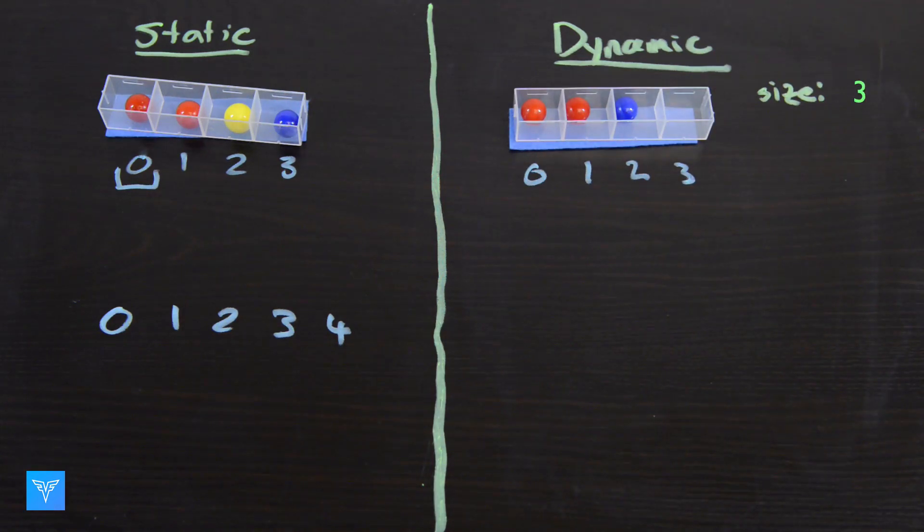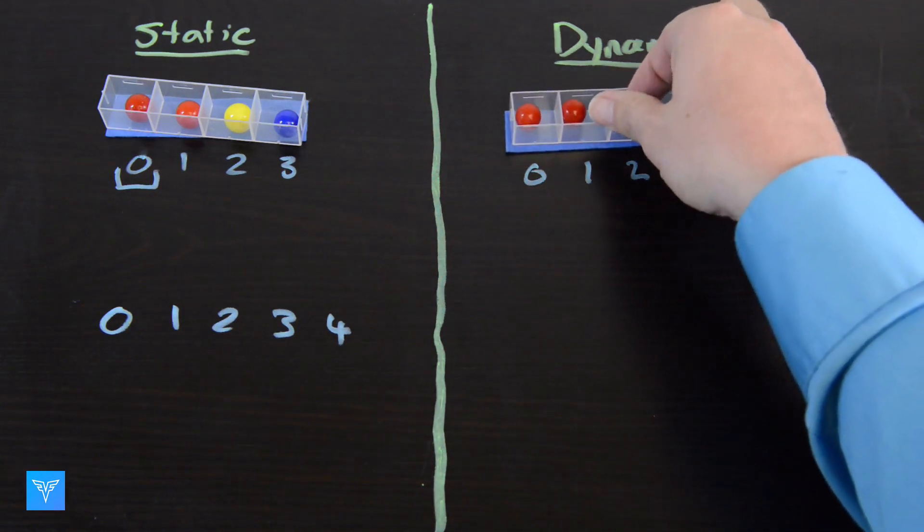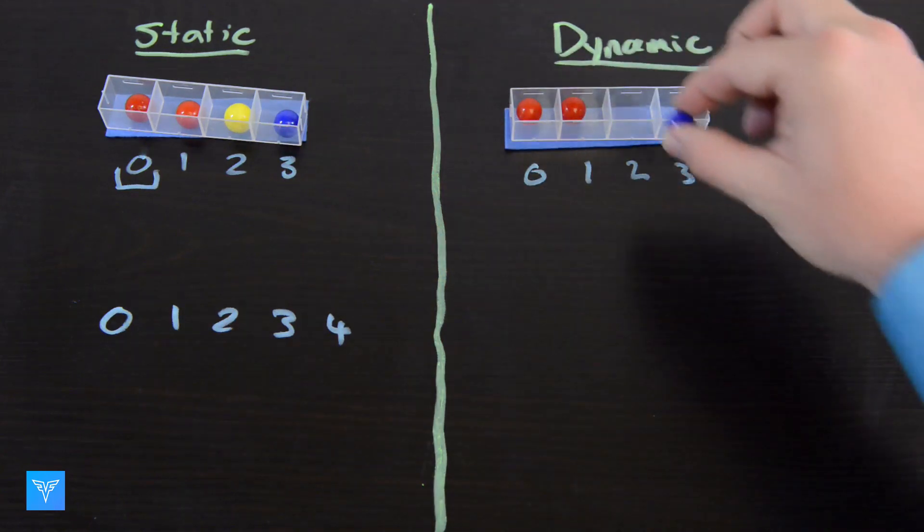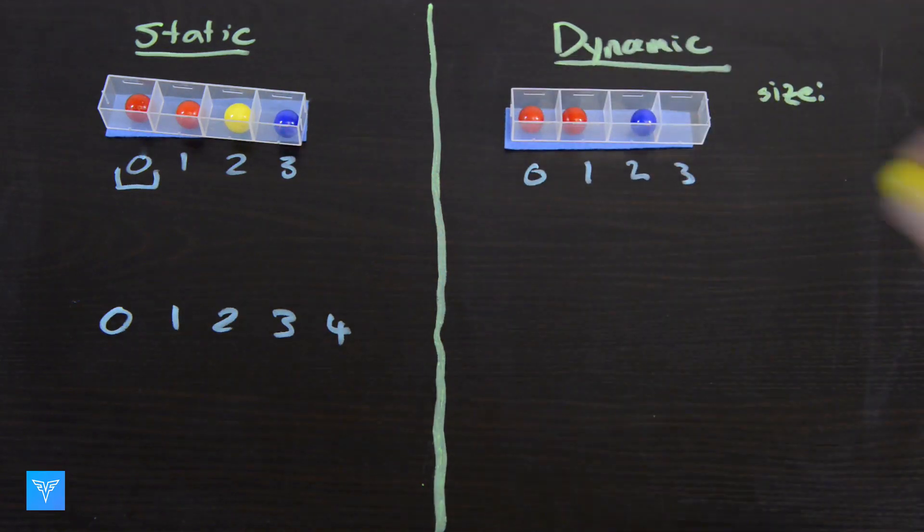If we want to delete an element, we can remove it while decreasing the size parameter. Of course, if we add too many elements, we can still run out of room, and we have to increase the size of the dynamic array.